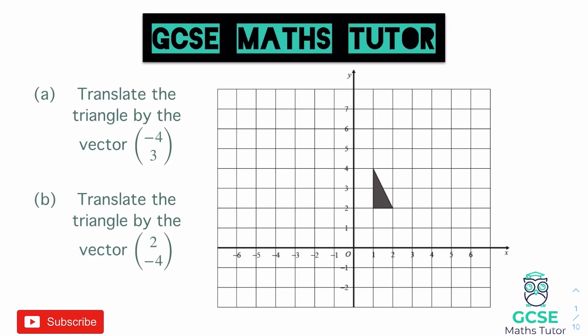To translate a shape, pick one of the vertices. I'm going to pick the top corner and move it four to the left — since we have negative four on the top — and three up. So we go one, two, three, four to the left, then one, two, three up, and that finishes just there. Draw light pencil lines to guide you, then redraw the triangle from that new point: go down by two, across by one, and join it up.